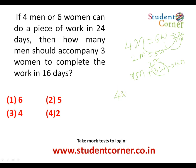Four men can do it in 24 days, so M1×D1 = 4×24 equals (X+2) men working for 16 days. Solving: 96 = (X+2)×16, giving X+2 = 6, so X = 4. Therefore four men should accompany the three women so that the work is done in 16 days.